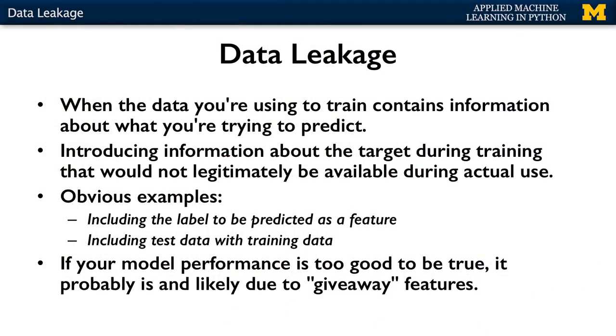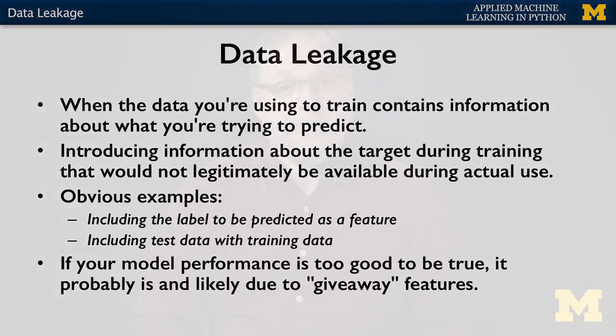Maybe the simplest example of data leakage would be if we included the true label of a data instance as a feature in the model. The model would learn the equivalent of: if this object is labeled as an apple, predict it's an apple. Another clear example of data leakage is having test data accidentally included in the training data, which leads to overfitting.